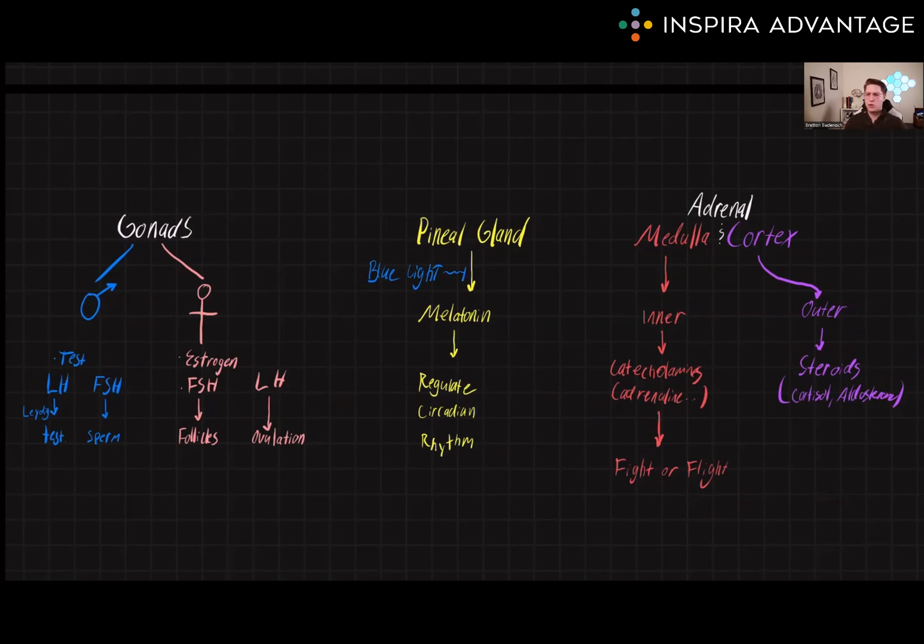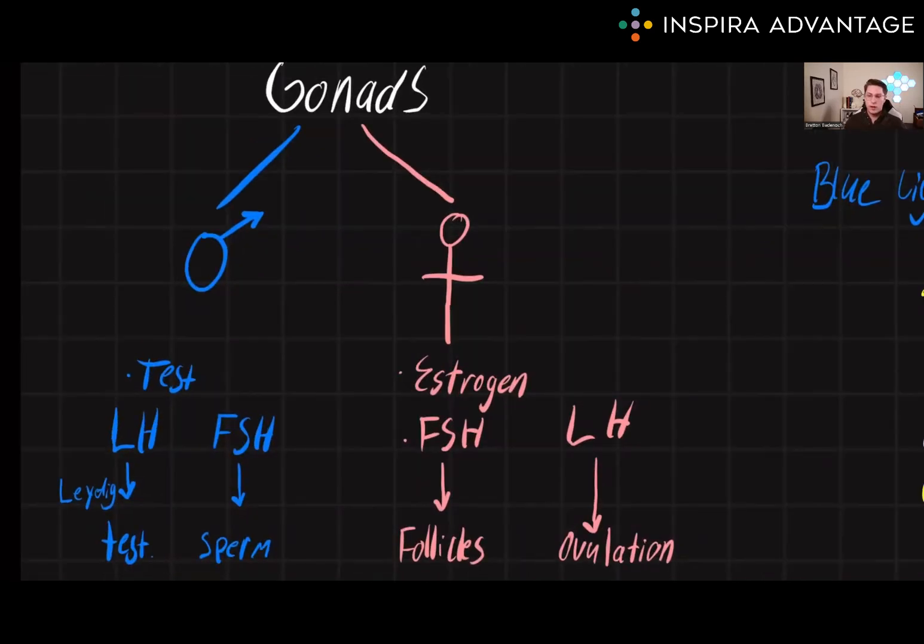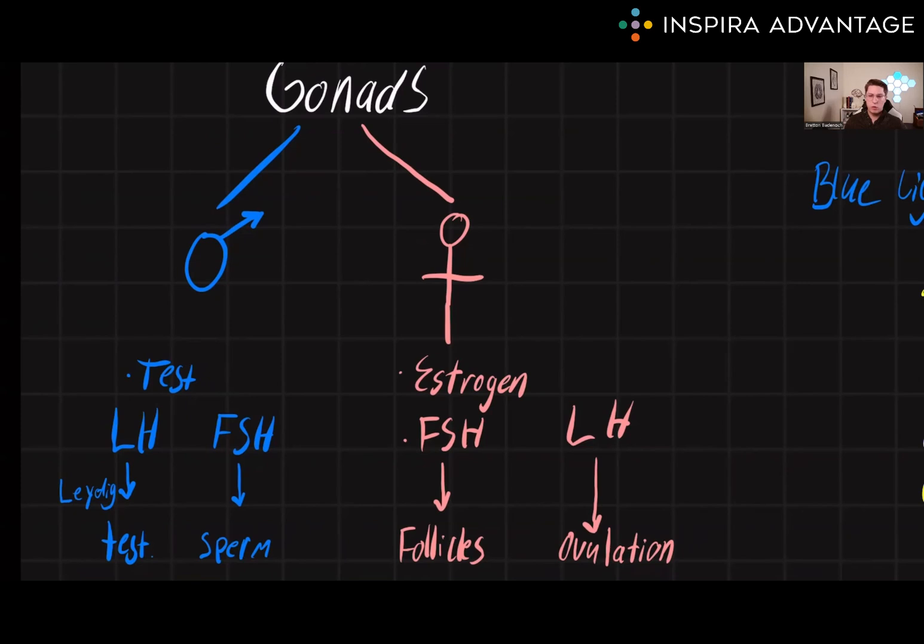Let's get started with the gonads, which are the primary reproductive organs in the body. The gonads play a crucial role in the production of hormones that regulate sexual development and reproduction. The gonads—the testes in males and ovaries in females—are responsible for the production of the primary male and female sex hormones, testosterone and estrogen, respectively.